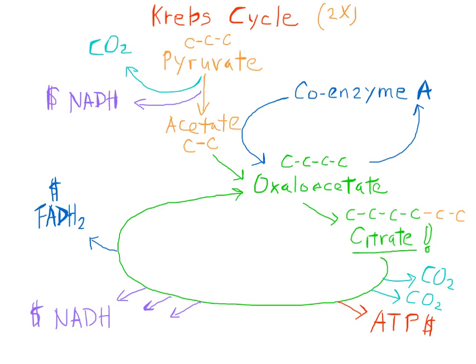A couple quick things. Notice that the three carbons that are in pyruvate were each released to the atmosphere as molecules of CO2. Also notice that for two Krebs cycles, we would make two molecules of ATP from each molecule of glucose, and likewise from two Krebs cycles, we would make eight molecules of NADH and two molecules of FADH2.